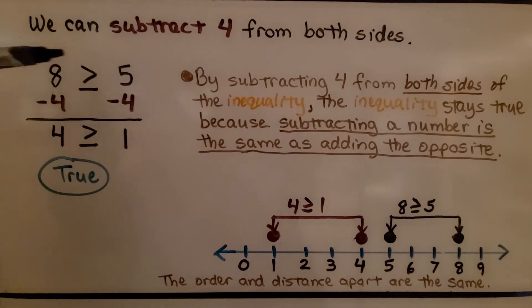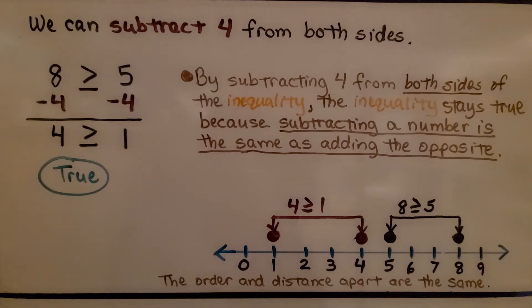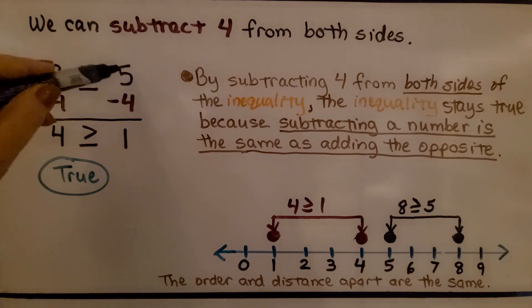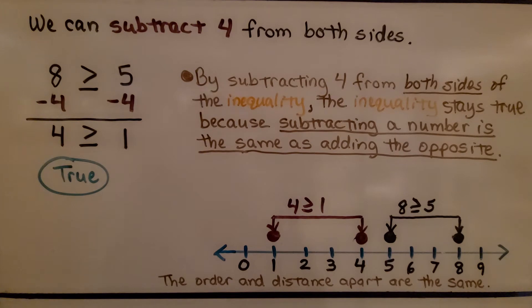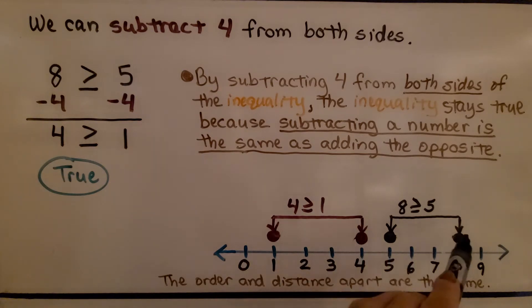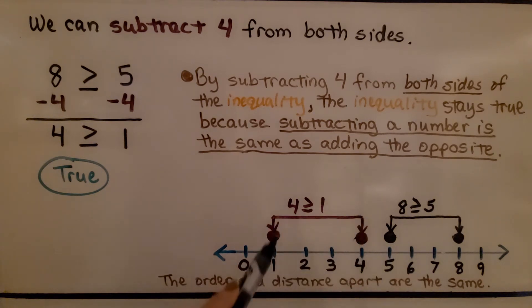Here we have an inequality that 8 is greater than or equal to 5 — it is greater than. We can subtract 4 from both sides. We take 4 away from 8 and get 4, and take 4 away from 5 and get 1. We have 4 is greater than or equal to 1 — that's true, it is greater than 1. By subtracting 4 from both sides, the inequality stays true because subtracting a number is the same as adding the opposite. We have 8 greater than 5, and 4 greater than 1 — the order and distance apart are the same.